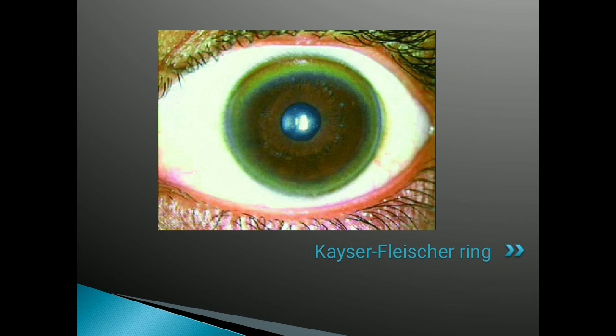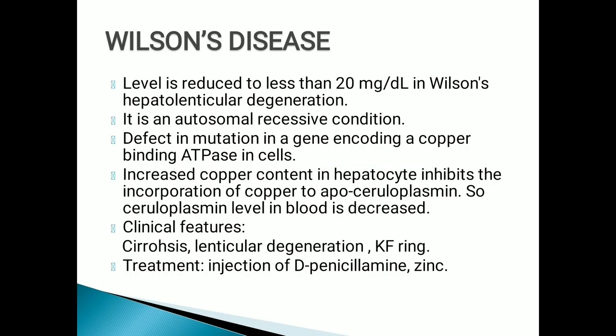Wilson's disease is characterized by reduced ceruloplasmin below 20 mg/dL. It is an autosomal recessive condition where there is a mutation in the gene encoding copper-binding ATPase in the cell. Increased copper in the hepatocyte inhibits the incorporation of copper into ceruloplasmin, reducing its levels. Clinical features include cirrhosis, lenticular degeneration, and Kayser-Fleischer ring — copper deposition at the corneoscleral junction (limbus). Treatment includes a low copper diet, D-penicillamine injection, and zinc, which reduces copper absorption.